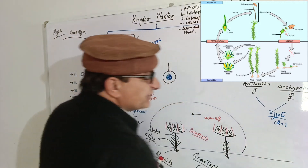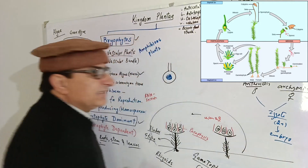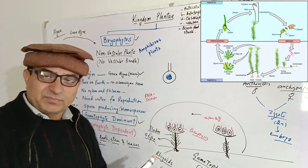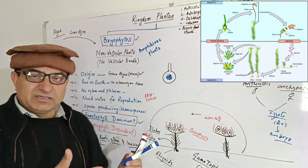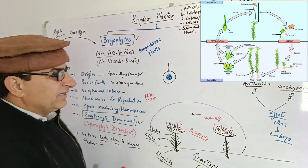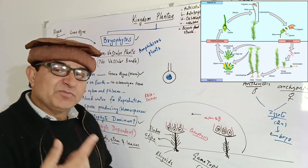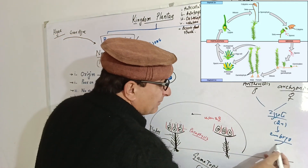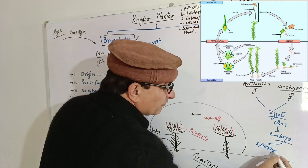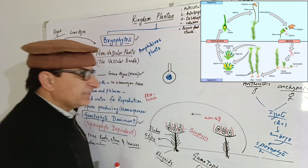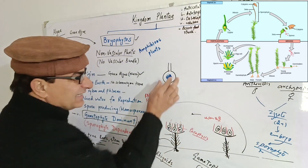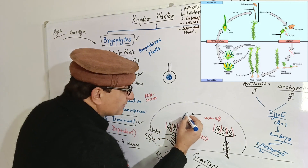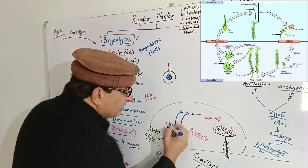The zygote is a diploid structure. The zygote will develop into an embryo through mitotic divisions — as the number of cells increases from one, the structure is termed an embryo. The embryo keeps undergoing mitotic divisions, producing a large number of cells, and then differentiates into a sporophyte generation. The zygote inside the archegonia undergoes mitosis and produces this structure which consists of foot, seta, and capsule.